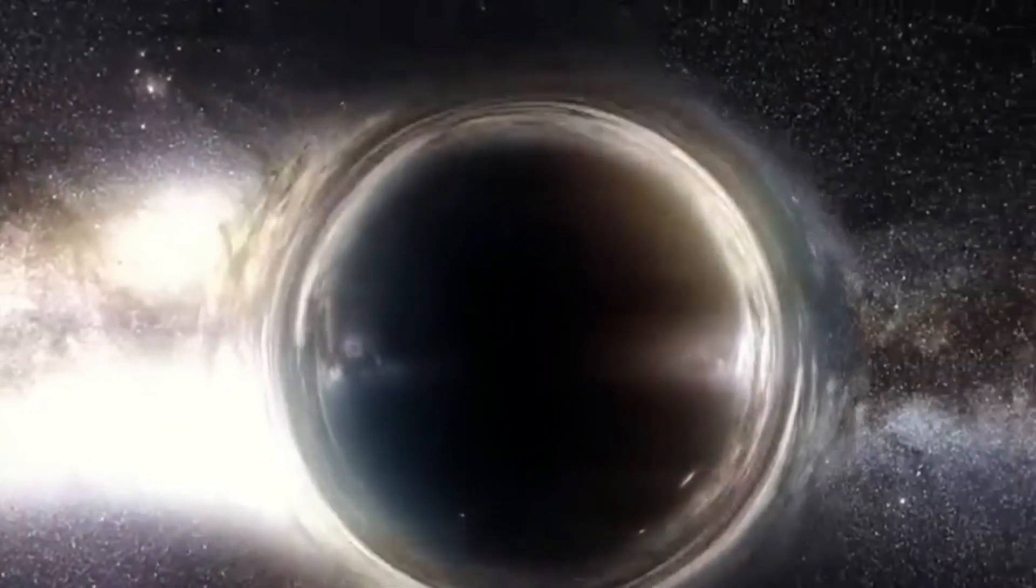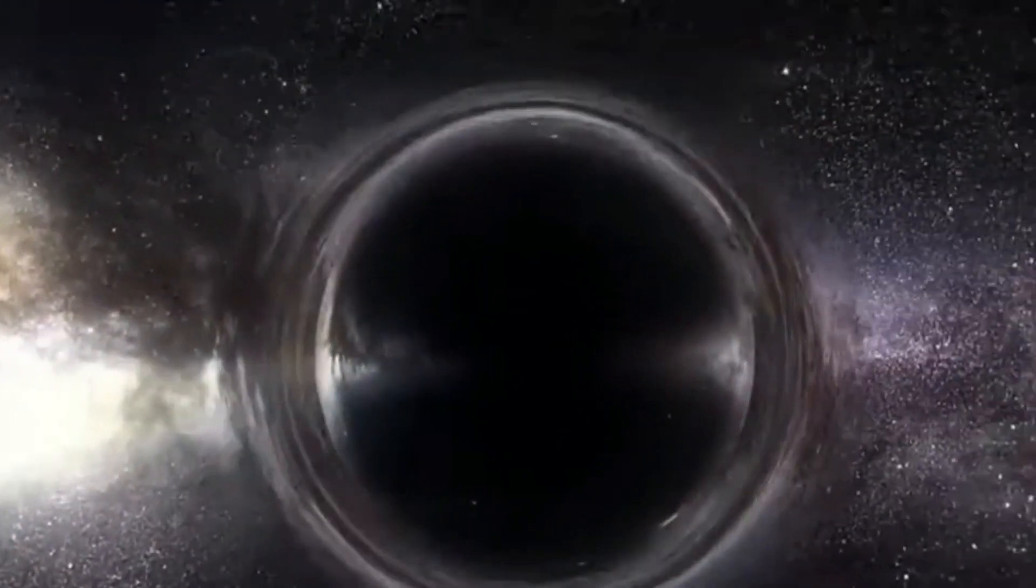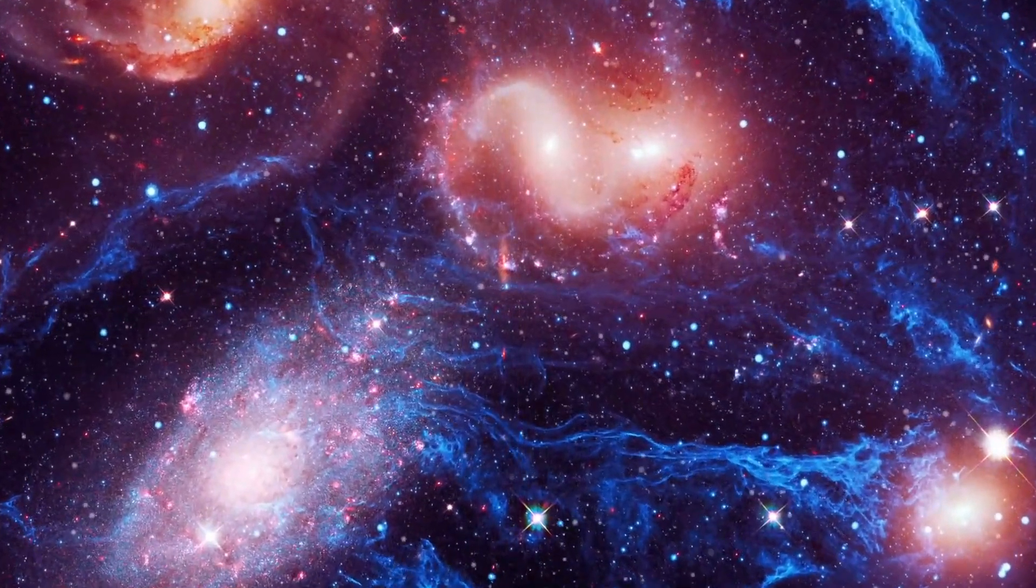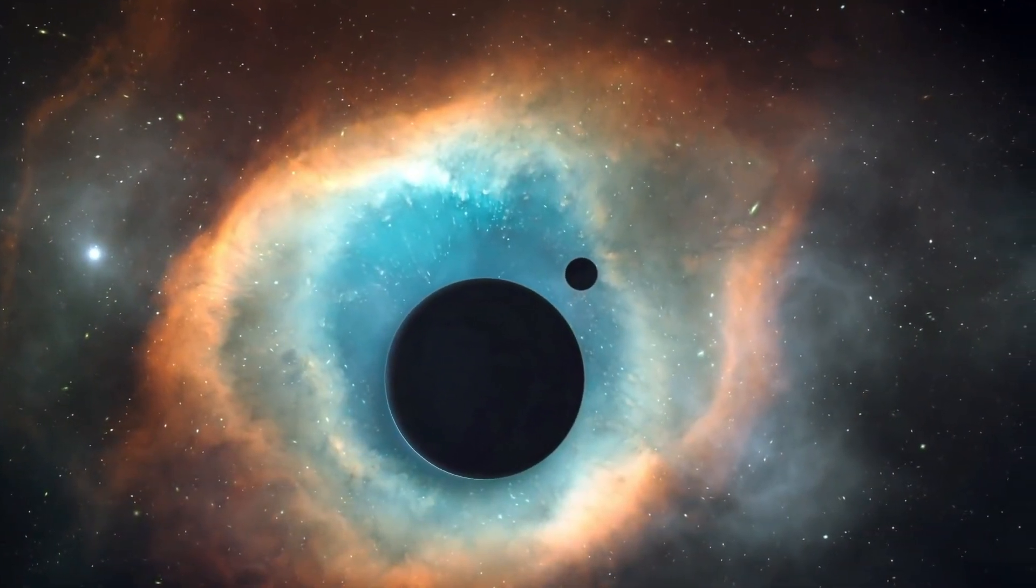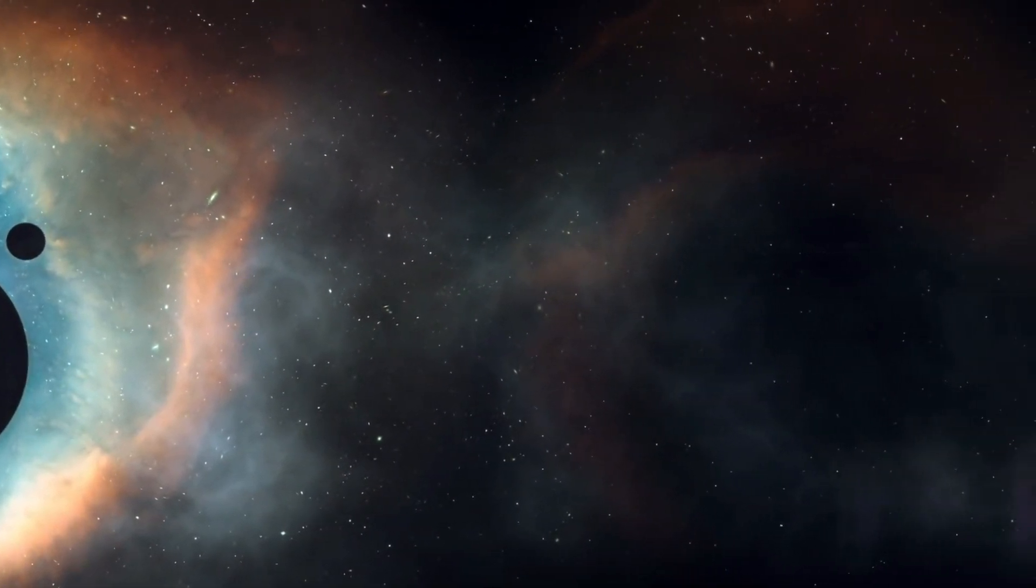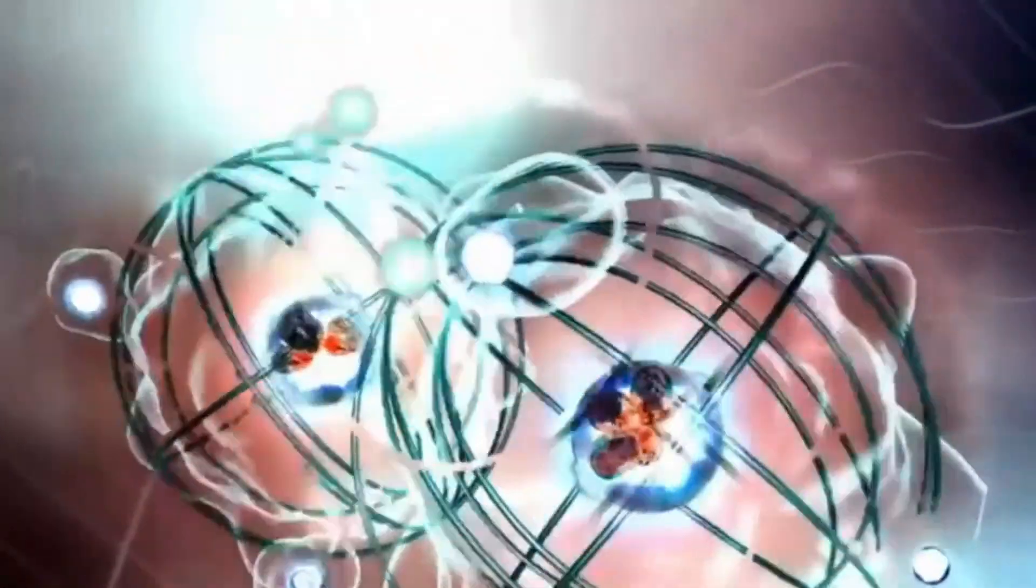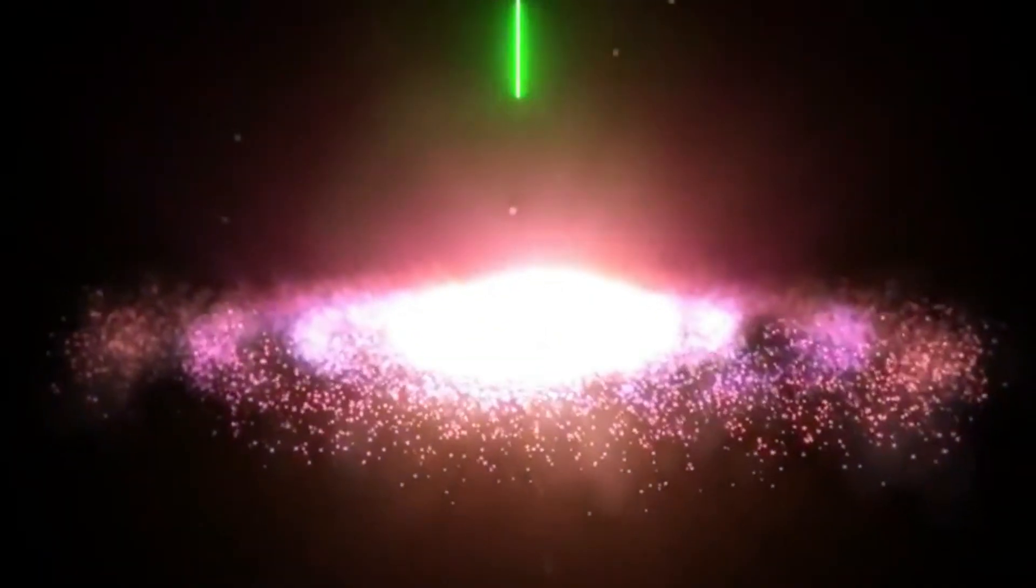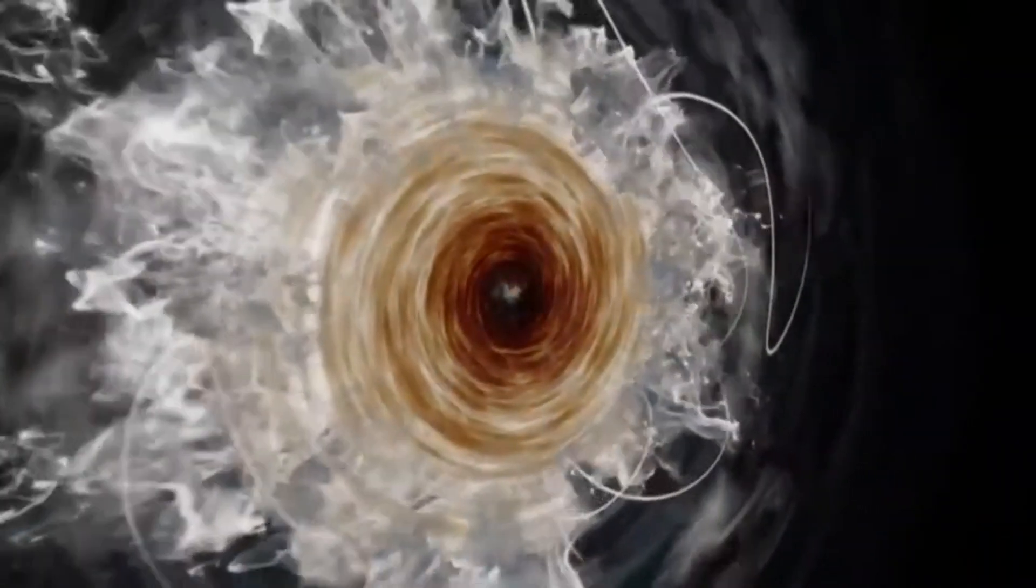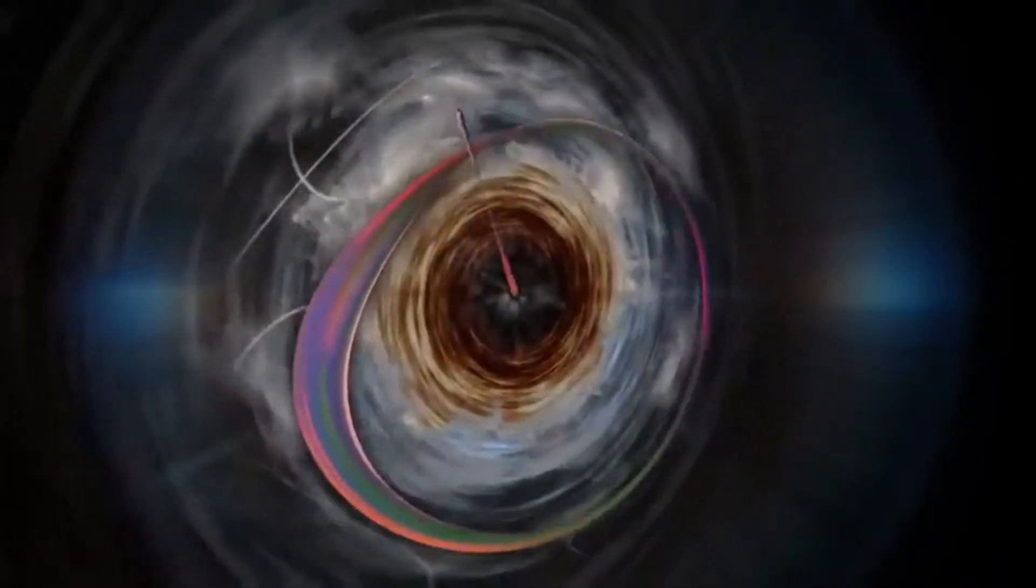Some scientists now believe dark matter may not be a collection of invisible particles at all. Instead, they suggest it behaves more like an energy field that permeates space itself. Others propose an even wilder theory, that dark matter is tied to an undiscovered quantum force. Perhaps the most radical idea yet is that dark matter isn't a missing mass, it's a missing force. And here's where things get even crazier, because physicist Michio Kaku has been predicting something like this for years.